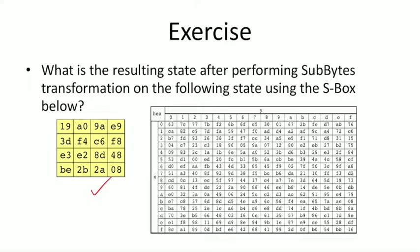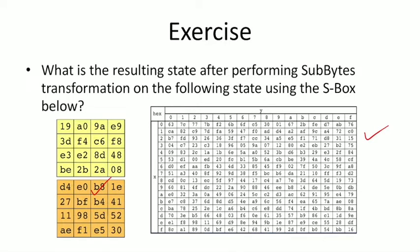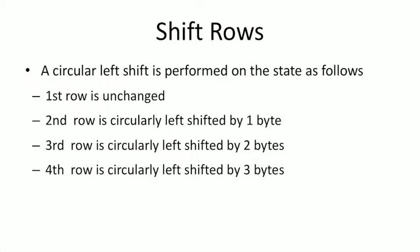Pause here and find the resulting state after performing the SubBytes transformation on the following state using this substitution table. The answer: for A0, you look in row A and column 0, and at their intersection is E0 — so A0 gets replaced with E0, and so on for all remaining bytes.